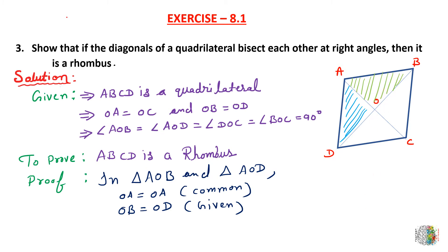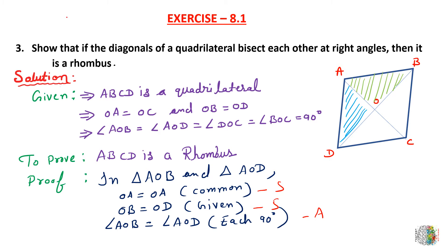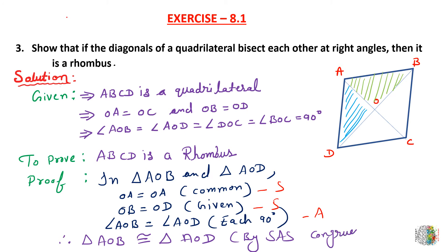Angle AOB is equal to angle AOD, each being 90 degrees. So by SAS congruency, we can say that these two triangles are congruent. Therefore, triangle AOB is congruent to triangle DOA by SAS congruency.